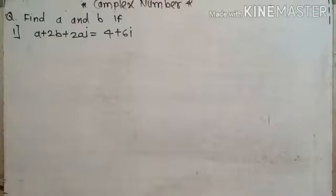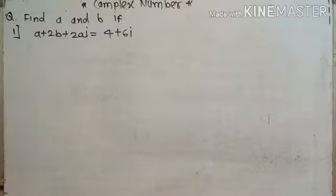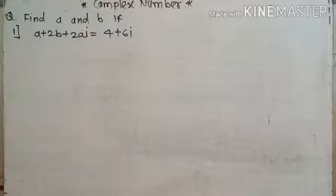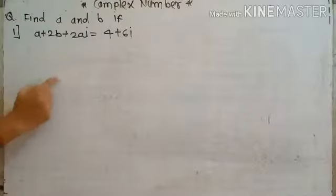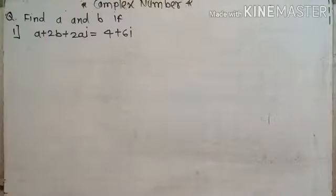Today we look at examples of complex numbers, specifically on equality of complex numbers. Equality of complex numbers means when on two sides there are two complex numbers with unknown terms. We have to find the value of those unknown terms by using the rule that real parts are equal and imaginary parts are equal.